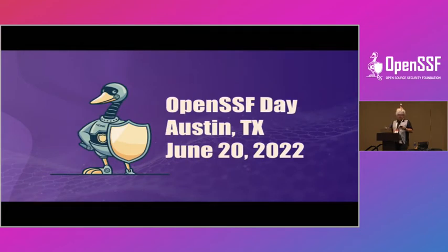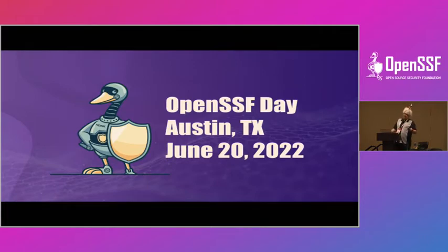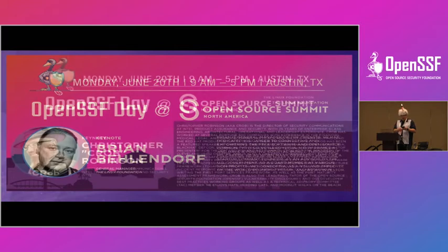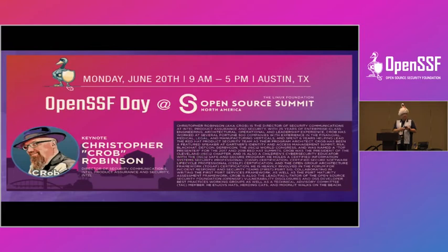Our next speakers are Jeff Mendoza and Steven August. Steven was not able to join us, so we have Naveen Sreenivasan here speaking on his behalf. Jeff is an engineer at Google's open-source security team, focused on supply chain security and securing Google's GitHub repositories. We'll let Naveen introduce himself since Steven didn't provide a bio.